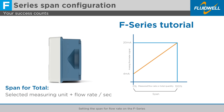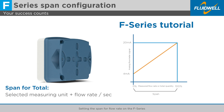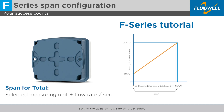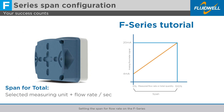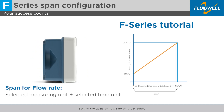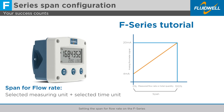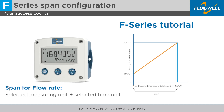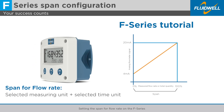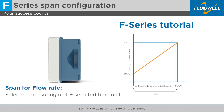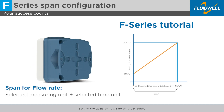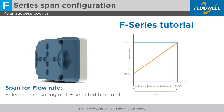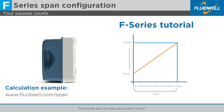For total, the span is based on the selected measuring unit and the flow rate per second. For flow rate, the span is based on the selected measuring unit per selected time unit. The more accurately you define the span, the more accurately the F-series indicator will measure.